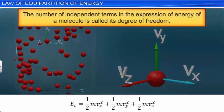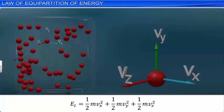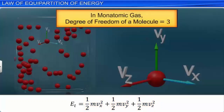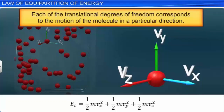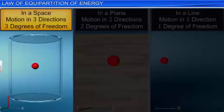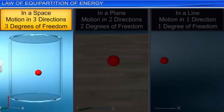The number of independent terms in the expression of energy of a molecule is called its degree of freedom. In the expression of translational kinetic energy, there are three terms that can be treated independently. So the degree of freedom of a molecule in the case of a monoatomic gas is 3. Each translational degree of freedom corresponds to the motion of the molecule in a particular direction. If the molecule is moving in space, it can move in three directions, hence it has three degrees of freedom.